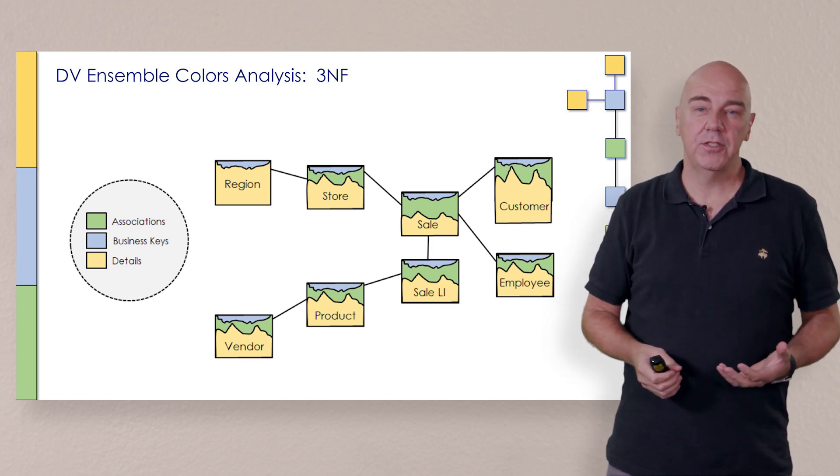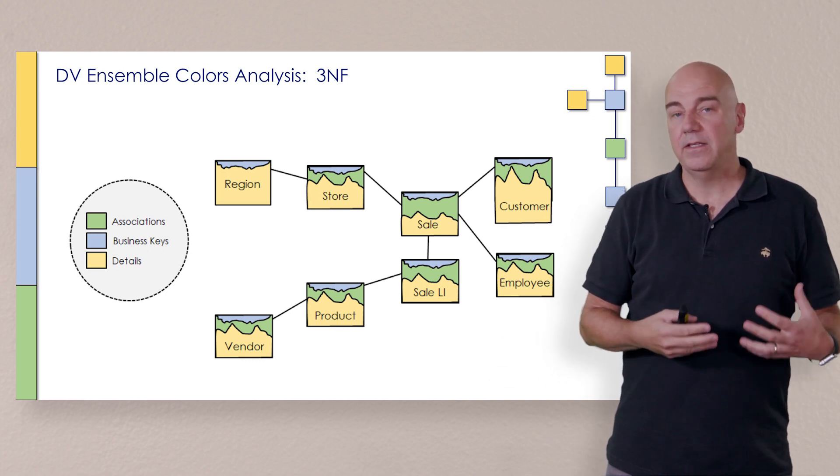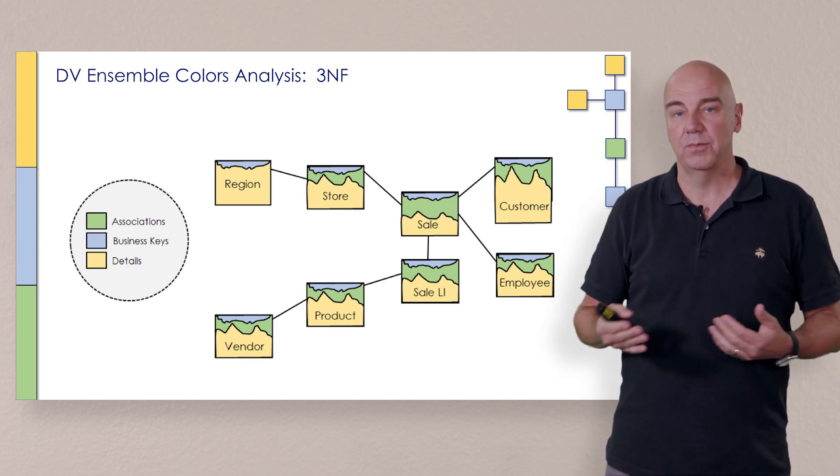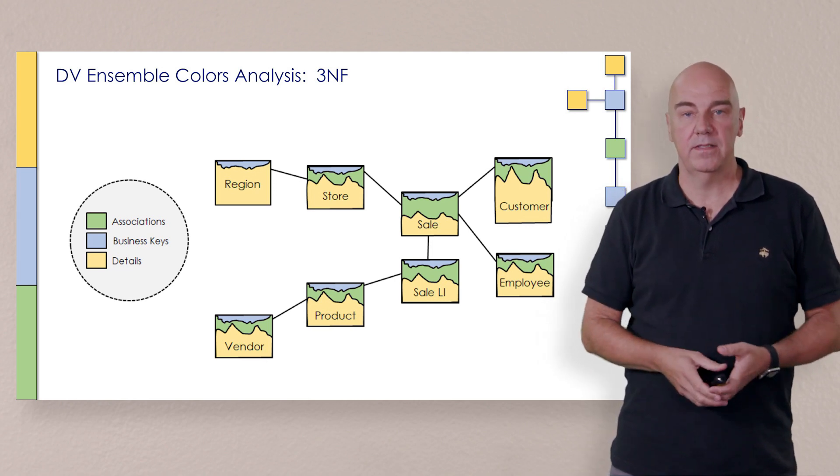So in this case, the associations or relationships are green. The things that are keys or identifiers or instances are blue. And the things that represent the context that describe things is yellow.